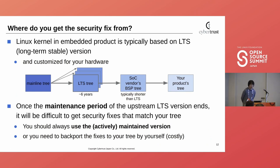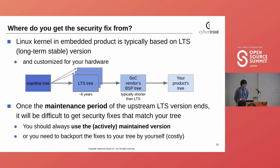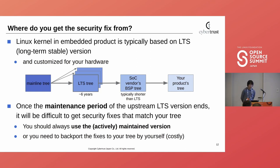The next point to be checked is: where do you get the security fix from? The Linux kernel in an embedded product is typically based on an LTS long-term stable version and customized for your hardware. LTS versions have a limited maintenance period. For example, recent Linux kernel LTS trees have been maintained for six years. Once the maintenance period of the upstream LTS version ends, it will be difficult to get security fixes that match your tree. So you should always use the actively maintained version, or you need to backport the fixes to your tree by yourself — but it's costly.